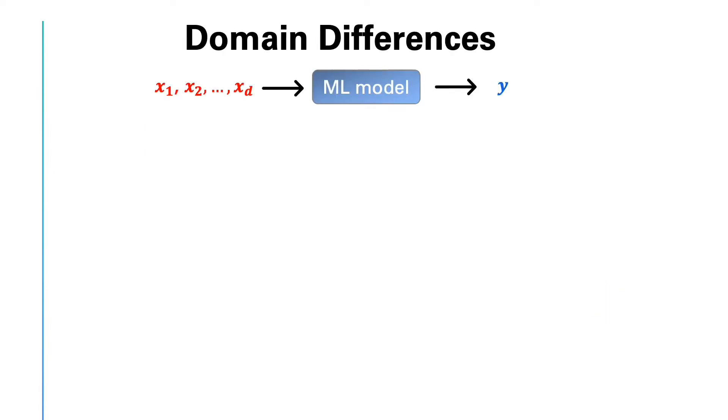One issue that we want to discuss today is domain differences. The central paradigm in supervised learning is the same. We want to predict the value of y based on the input data x. However, there are differences in different domains. For example, in some scenarios, in principle, y can be accurately predicted from x, assuming that we have enough training data and a good algorithm.